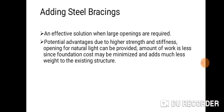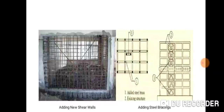Adding steel bracing is an effective solution when large openings are required. Potential advantages include the ability to provide openings for natural light due to higher strength and stiffness. The amount of work is less since foundation cost may be minimized and it adds much less weight to the existing structure. These photographs show retrofitting with additional shear walls and additional steel bracing.